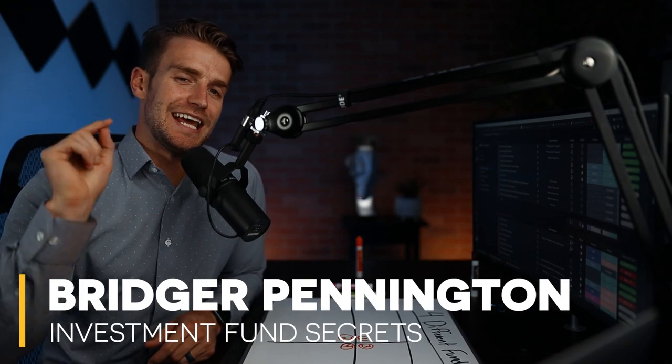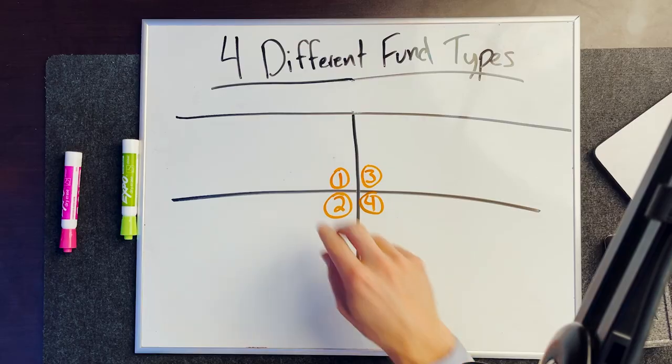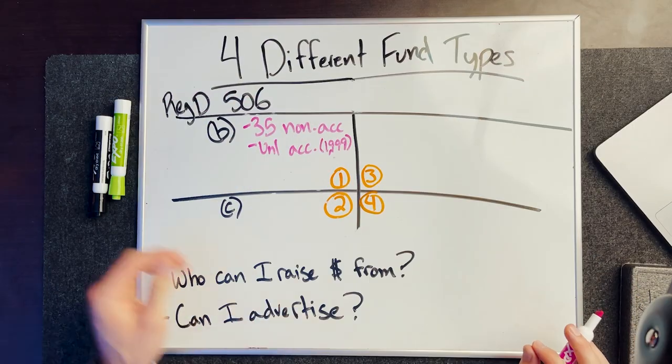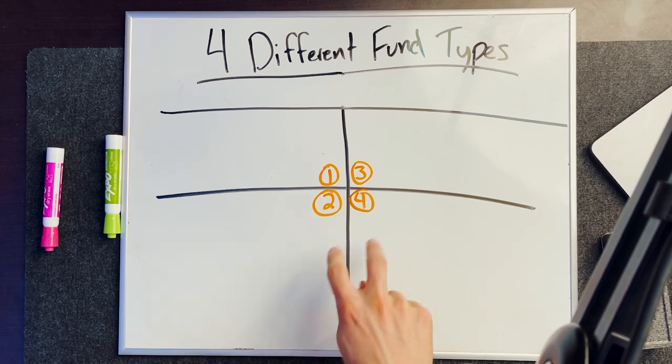Welcome back to the show. Today we're going to talk about the four different fund types. I get this question a ton: what's the difference between funds that can advertise and funds that can't advertise? Which funds can I raise money from accredited investors or non-accredited investors from? How does this all play together? The answer depends on these four things I'm about to talk about in this video, and there are pros and cons to each one.